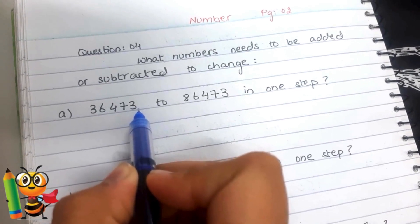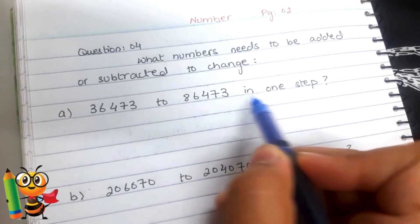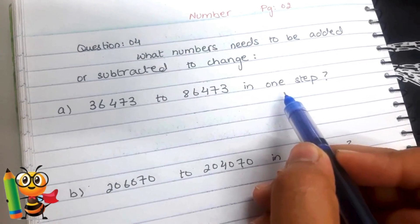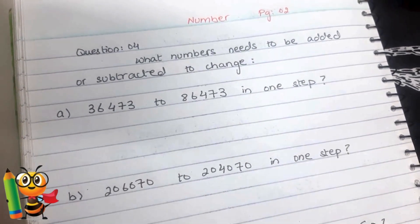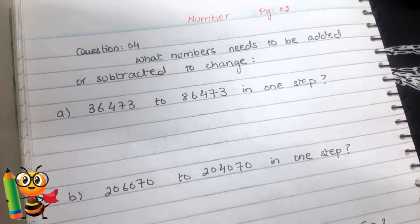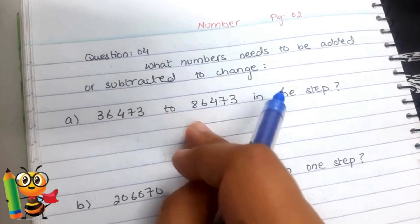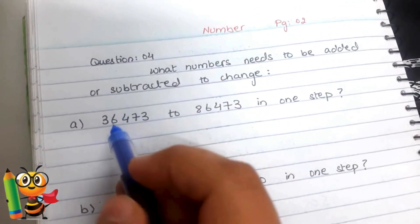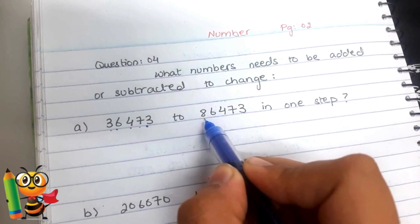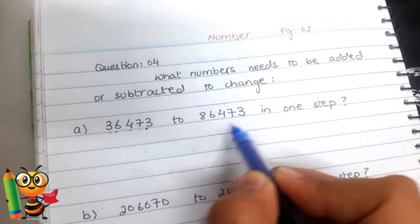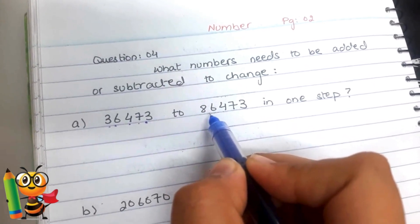Part one says 36473 and we have to change it into 86473. Make sure you do it in one step. Our first step is to recognize whether the number we need to convert is bigger or smaller. You can see the number is 36473 and we need to convert it into 86473, so it's quite clear the number we are going to change to is the bigger one.